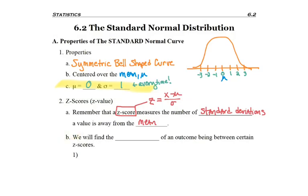This means from there we'll be finding the probability of an outcome being between certain z-scores, or to restate that in other words, the probability of an outcome being between a range of standard deviations.